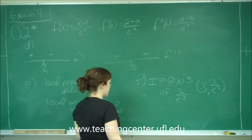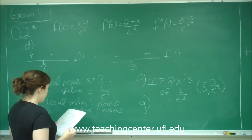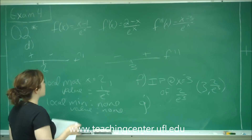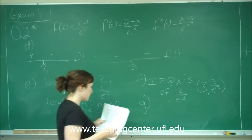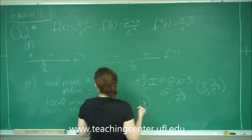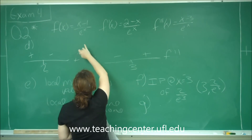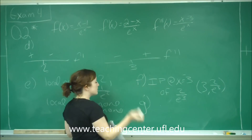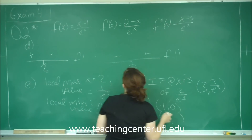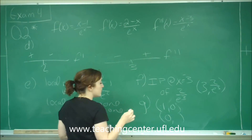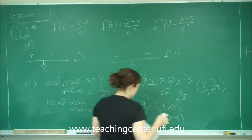Part G asks for intercepts. For the x-intercept, we set y equal to 0 and look at the numerator: 0 equals x minus 1, so x equals 1, giving the point (1, 0). For the y-intercept, we plug in x equals 0: 0 minus 1 over e to the 0 equals negative 1 over 1, which is negative 1, giving the point (0, negative 1).